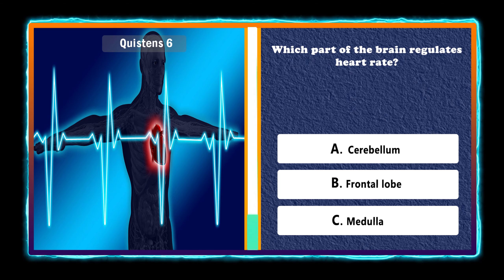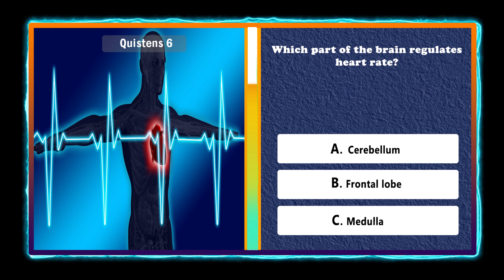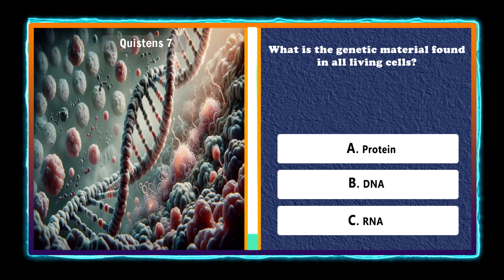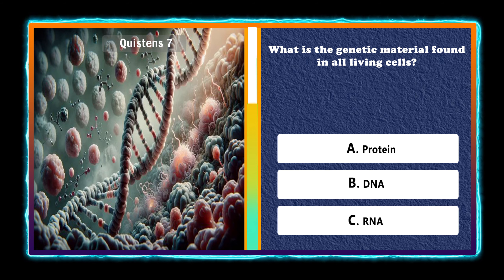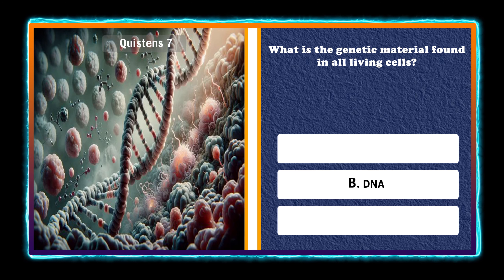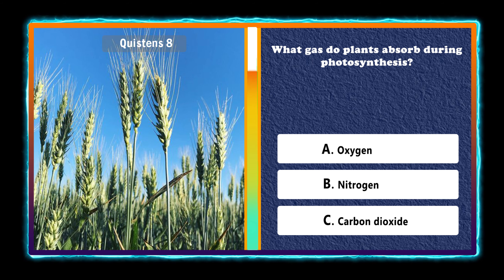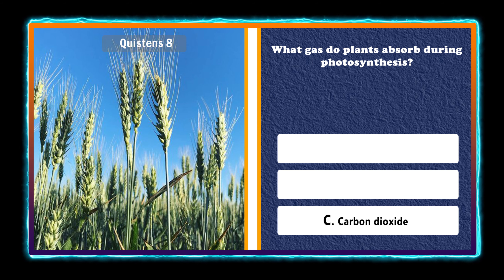Which part of the brain regulates heart rate? Medulla. What is the genetic material found in all living cells? DNA. What gas do plants absorb during photosynthesis? Carbon dioxide.